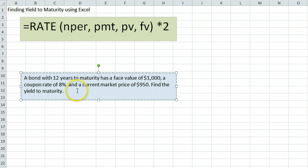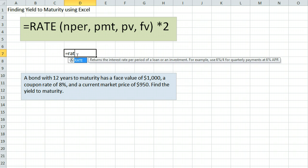To find the yield to maturity, we are going to use equals RATE. The first piece of information it's asking for is the number of periods.